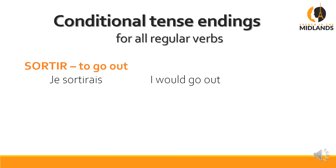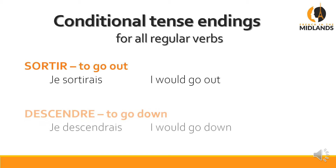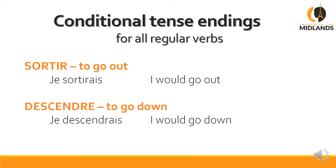For 'sortir', 'I would go out' is 'je sortirais' — again it sounds exactly like the future in the 'je' form, you just have to remember the S at the end if you write it down. 'Je descendrais' — 'I would go down'.